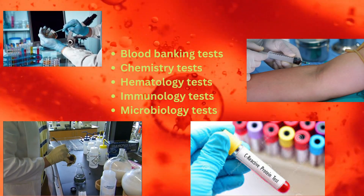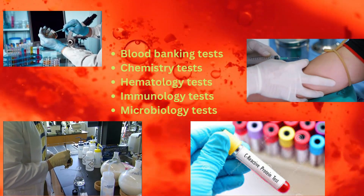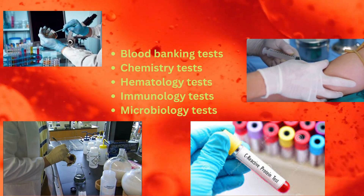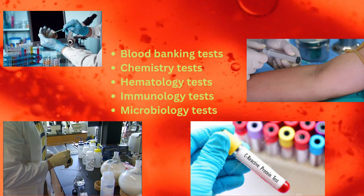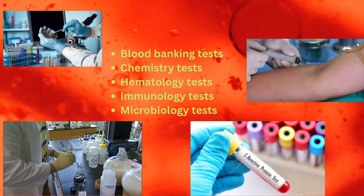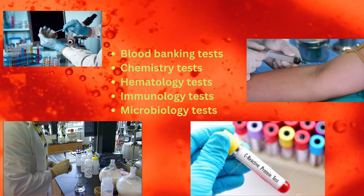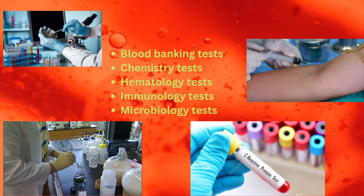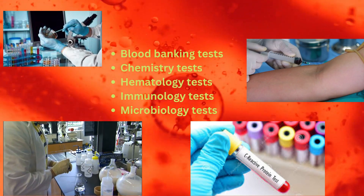Second, chemistry tests: those tests for the measurement of electrolytes, glucose, lipids, proteins, hormones, enzymes, trace metals, drugs, and toxins. Third, hematology tests: tests to count and classify blood cells and diagnose blood diseases, including coagulation disorders.